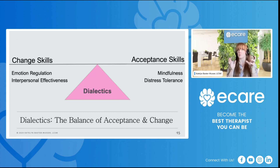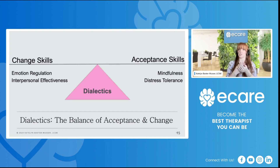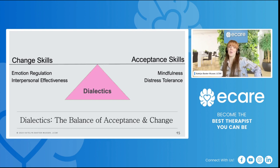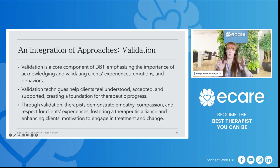Bringing these two opposing things together allows us to move forward. It creates balanced thinking for clients, which is really valuable, and it helps clients make personal growth. Your change-oriented skills in DBT are your emotion regulation skills and your interpersonal effectiveness skills. Your acceptance skills are your mindfulness skills and your distress tolerance skills. That is dialectics in a nutshell — we could probably do a three-hour training on dialectics alone.